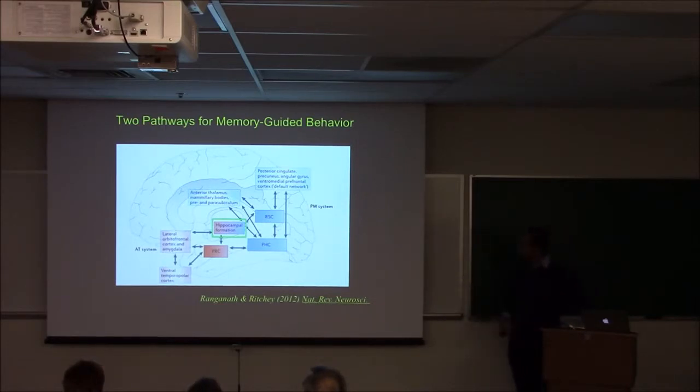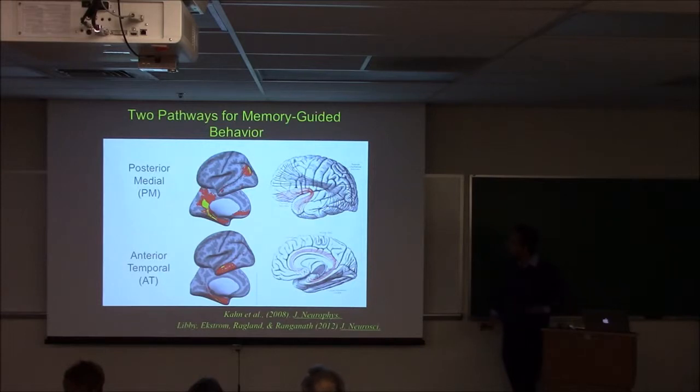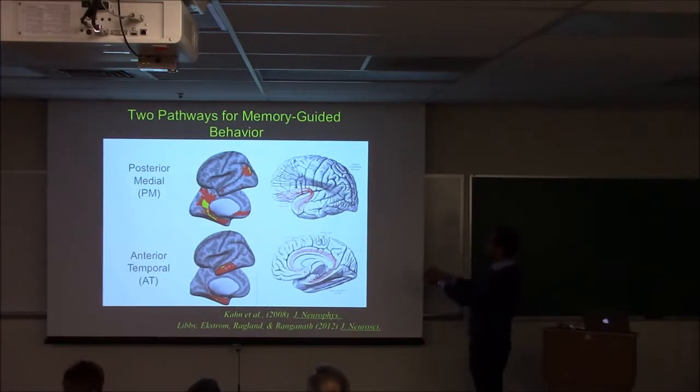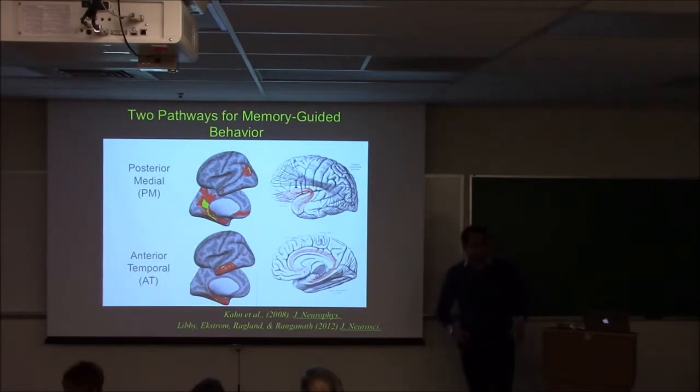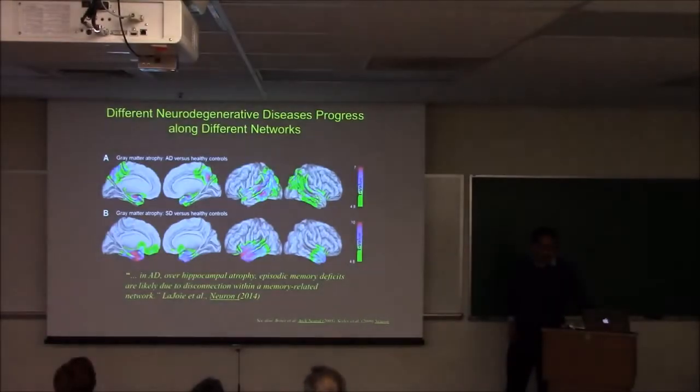There are two networks that we've identified throughout all our research. One of these networks we call the posterior medial system. This network corresponds to a white matter pathway called the cingulum bundle that connects all of these distributed regions of the brain to the hippocampus. Meanwhile, there's this anterior temporal system that's connected by a white matter pathway connecting different cognitive regions, including areas of the prefrontal cortex, to areas in the medial temporal lobe.